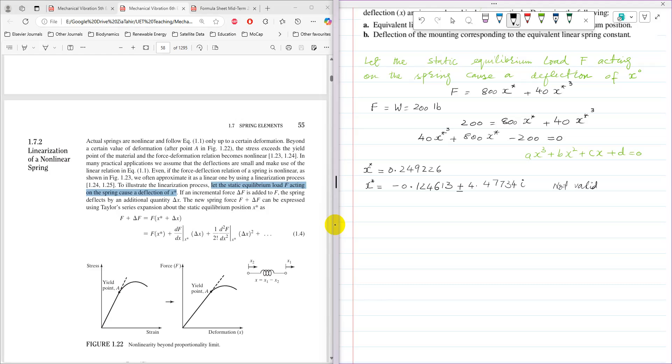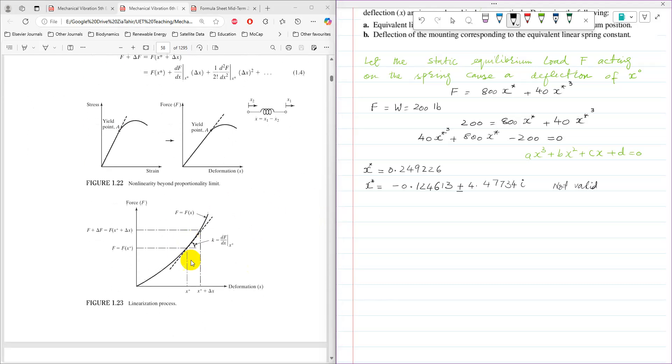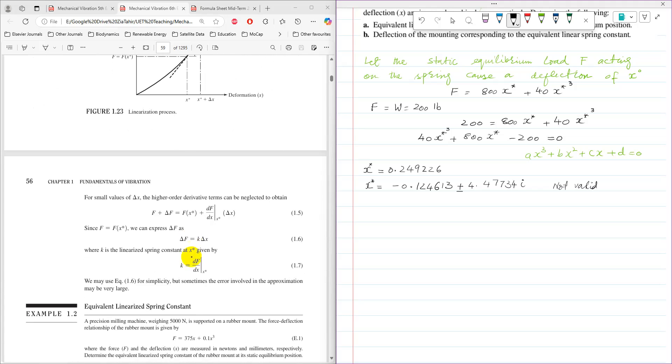Once I have calculated that value, then spring stiffness is k = df/dx at the value of x*. Now the equation which is the equation of spring is 800x + 40x³, so you need to take its first order derivative and then substitute the value of x there.